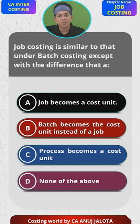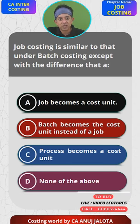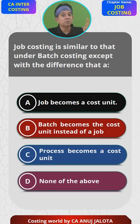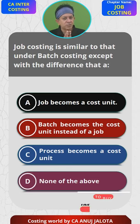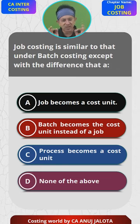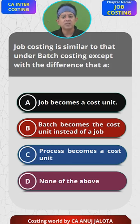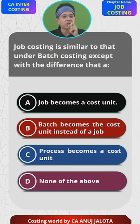First, what do you mean by batch costing? Suppose you were a fashion designer — you got an order from a customer: 'I want 1000 pieces of this type of dress.' So you design the dress once and then make 1000 pieces. Those 1000 pieces will be one batch. In that one batch, each of those 1000 units is homogeneous — meaning they are fully the same. Once we find out the cost of that batch, we divide by 1000, which gives the cost of each dress. So one batch becomes your cost unit.